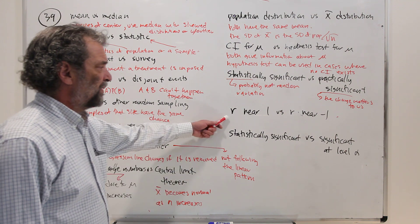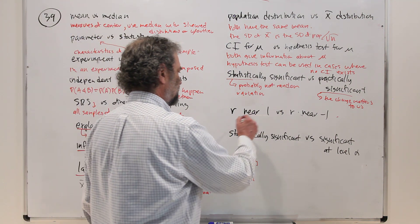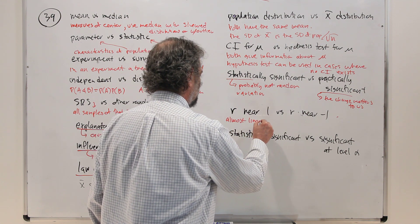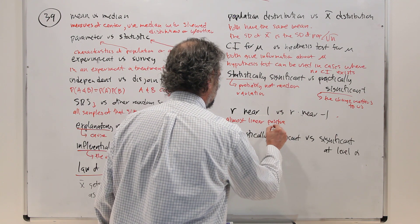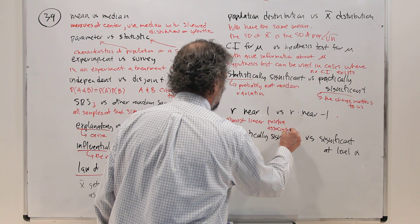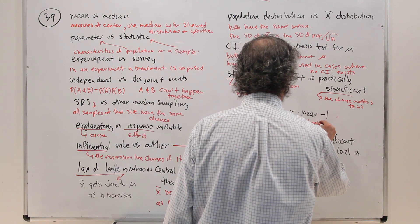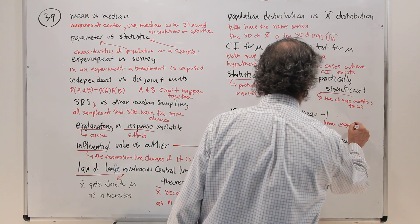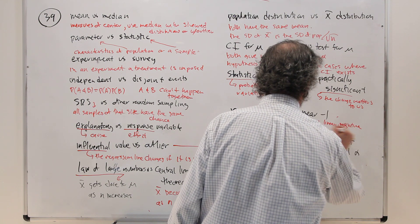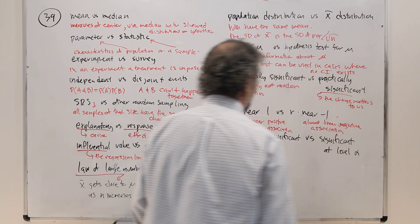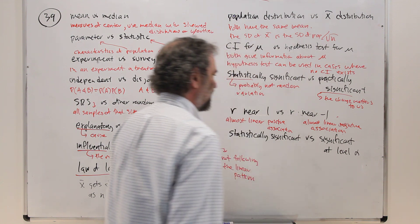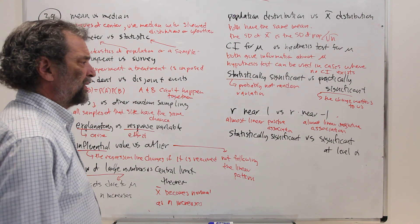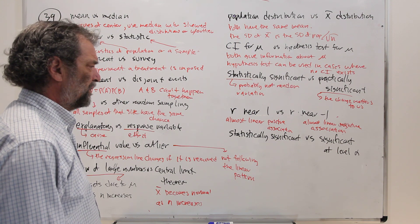Keep on going. R near one versus R near minus one. R near one says almost linear and positive association. And R near minus one says almost linear, negative association. You have to be a little careful with R because it's sensitive to outliers. So without outliers, R near one indicates almost linear with a positive slope. And R near minus one indicates almost linear pattern with a negative slope.